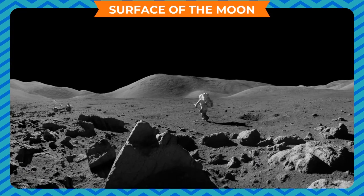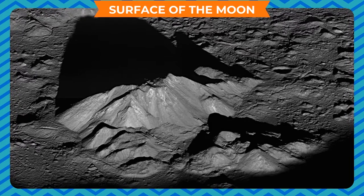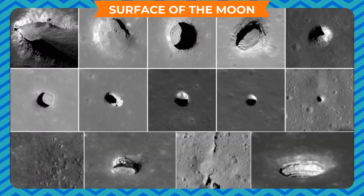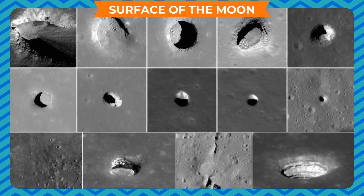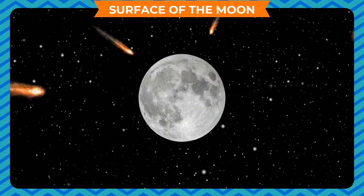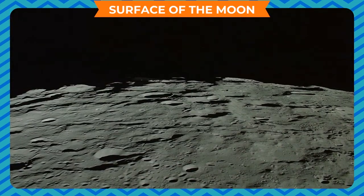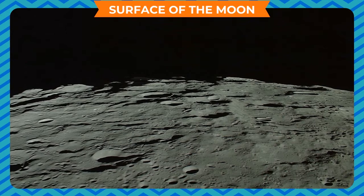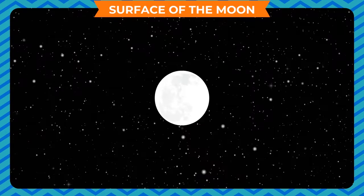The surface of the moon is uneven and rough, scattered with huge mountains, great plains, and big round pits known as craters. These are the places where long years ago meteors hit the surface of the moon and dug into it. A layer of gray dust covers the surface of the moon.